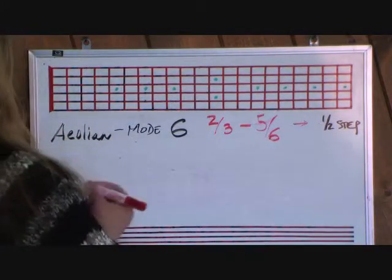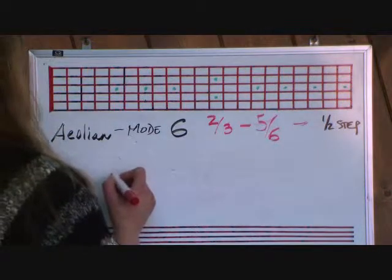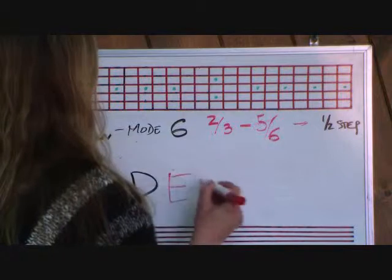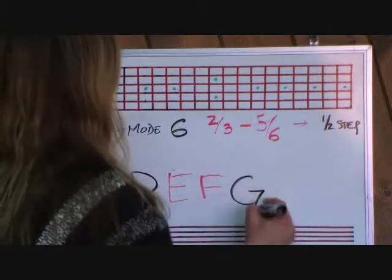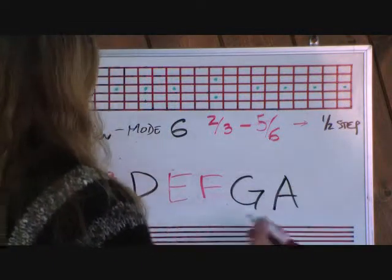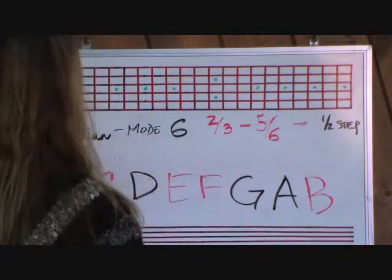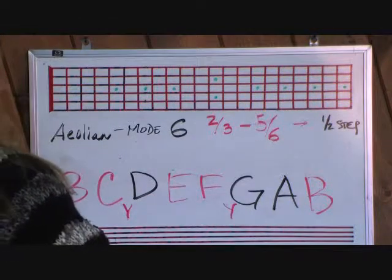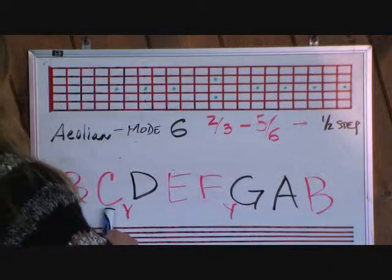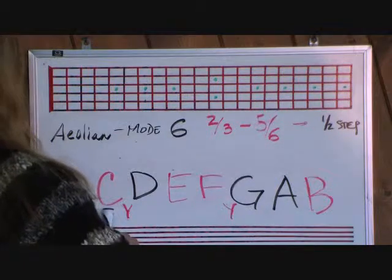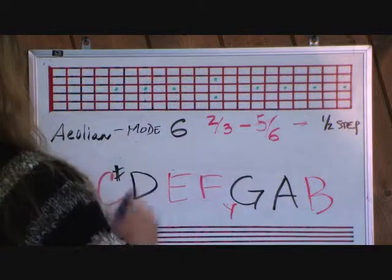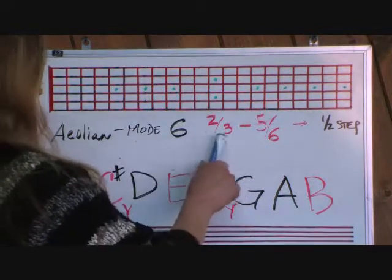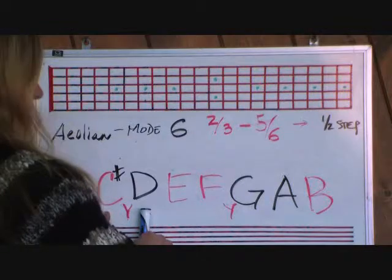Now go to the B Aeolian. B is the first. That's where the half steps are supposed to fall. We start with B, the first. First to the second, B to C, is only a half step, so we need to make it a whole step — we need to apply a sharp to the C. C sharp to D, according to the formula, needs to be a half step between 2 and 3. C sharp to D is a half step, so you move on.